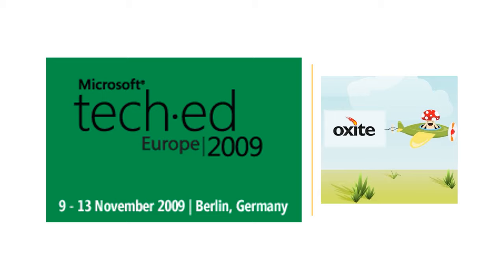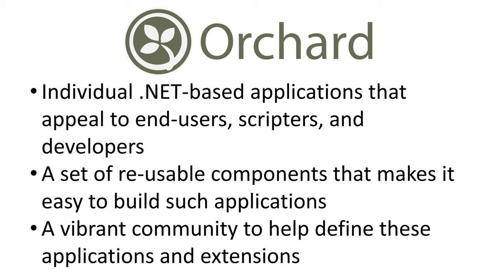Microsoft made the source code available for the first open-source Oxite CMS at the end of 2008. According to Mary Jo Foley, a tech journalist from ZDNet, Microsoft's open-source CMS platform Oxite was reborn as the Orchard project at TechEd Europe in November 2009. In the beginning, the intent for Orchard was threefold: individual .NET-based applications that appeal to end-users, scripters, and a set of reused components that make it easy to build such applications.